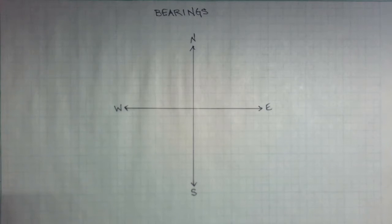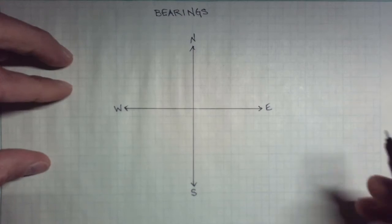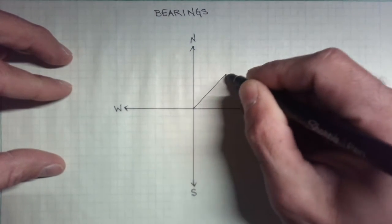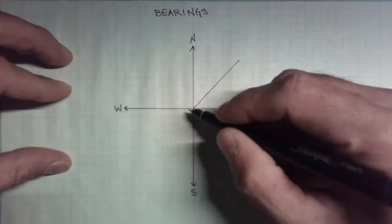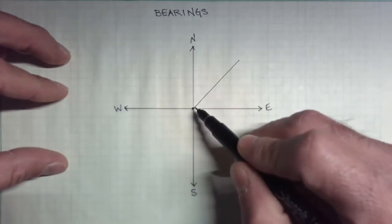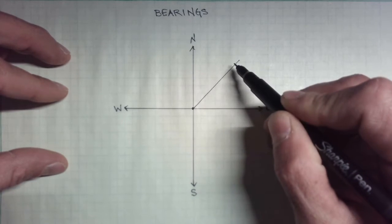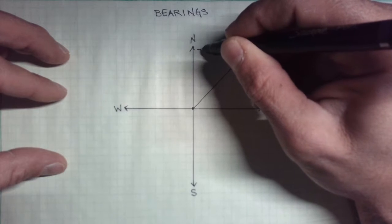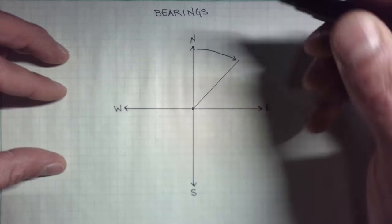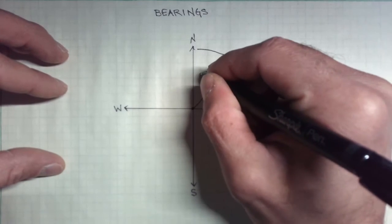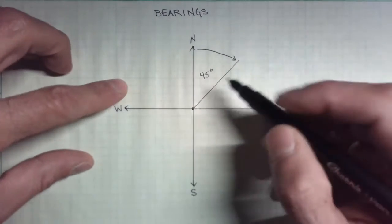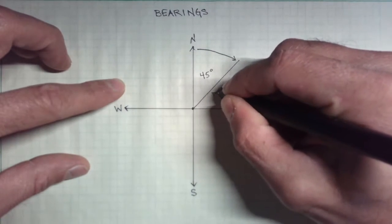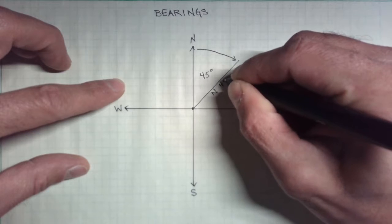Let's talk about bearings. Bearings record the direction of a line. So let's say we have a line, and if I'm standing at this point on the line and looking in this direction, the bearing angle is going to be from the north towards the east some number of degrees. Let's say it's 45 degrees. So in this case, the bearing for this line would be north 45 degrees east.